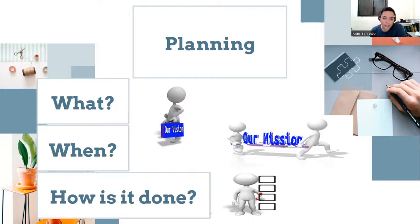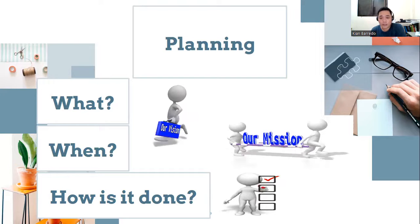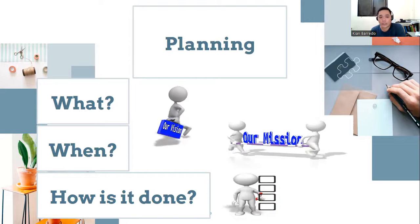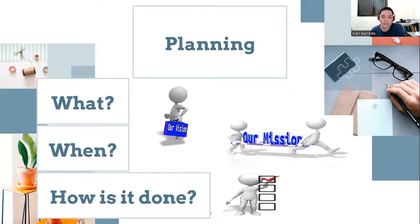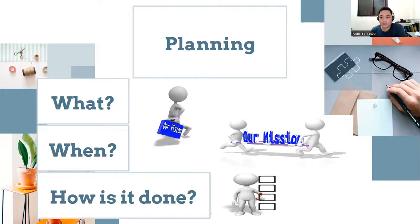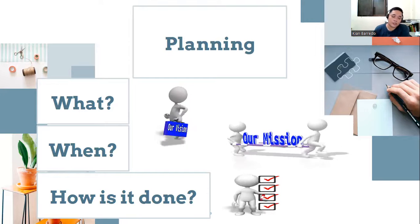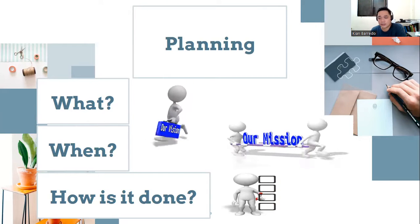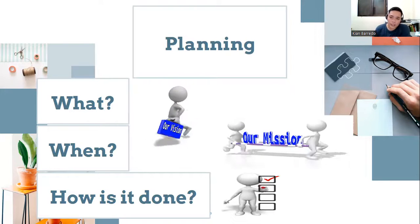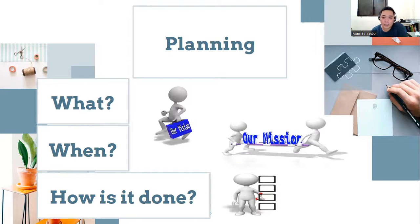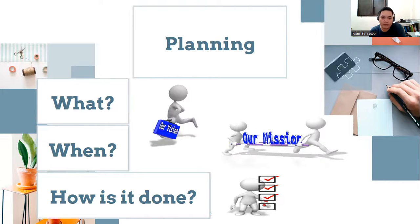On the other hand, when the question is 'when' — when to do it — the mission statement answers that. Vision and mission are always interconnected. Our vision is the long term, then the mission is the short term. As for 'how is it done,' that is the goal — you must have a checklist of how it should be done. That's the concise discussion of planning.